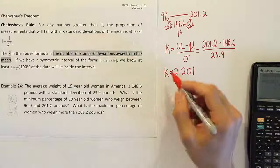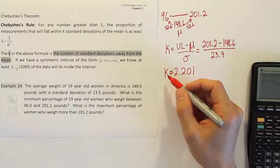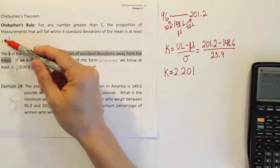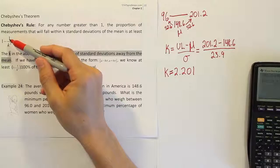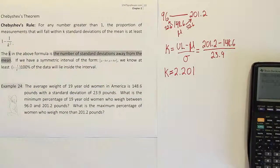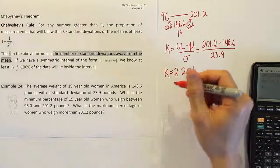So what is that next step? That next step is going to take that k that we just found and plug it into our formula for Chebyshev's theorem. See the theorem says that at least this proportion of data will be inside the interval. Or at least this percent of the data will be inside the interval if you multiply by 100% at the end.